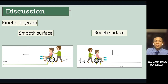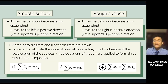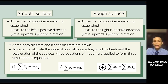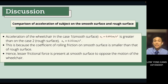Free body diagrams and kinetic diagrams are drawn for both smooth and rough surface cases, with an XY inertial coordinate system established. Three equations of motion are applied to form three simultaneous equations to calculate normal forces and acceleration. Comparing results: on the smooth surface (case 1), acceleration equals 0.491 m/s², which is greater than on the rough surface (case 2), which equals 0.351 m/s². This is because the coefficient of rolling friction on the smooth surface is smaller, resulting in less frictional force opposing the wheelchair's motion.